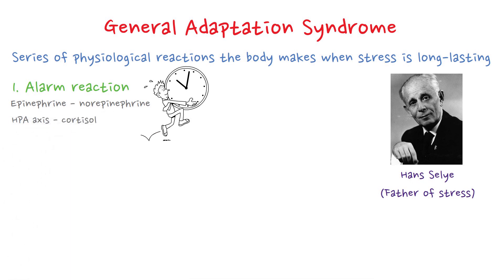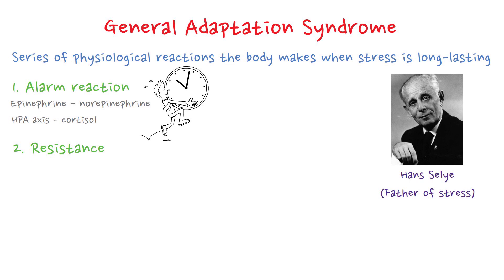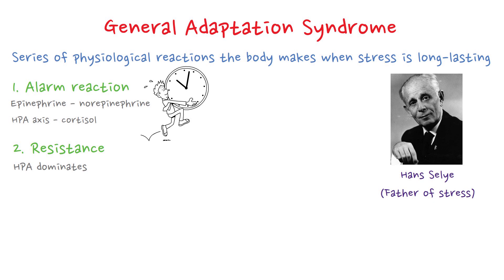We will talk about the HPA axis properly in another video. The next stage is the stage of resistance. During this stage, the body tries to adapt to the stressor. The initial reactions of the sympathetic nervous system become less pronounced and HPA activation dominates.